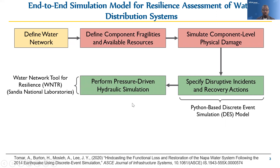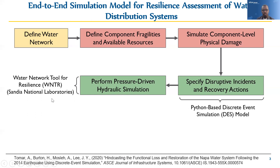For a water distribution system — though regardless of the type of system — you want an approach that gets you from physical damage and disruptive incidents to some measure of functionality. In this case, we're using hydraulic simulation to quantify the level of service provided to the region relative to the pre-event service, and that will be our measure of functionality. We're doing that using a tool developed at Sandia National Laboratories called the Water Network Tool for Resilience.